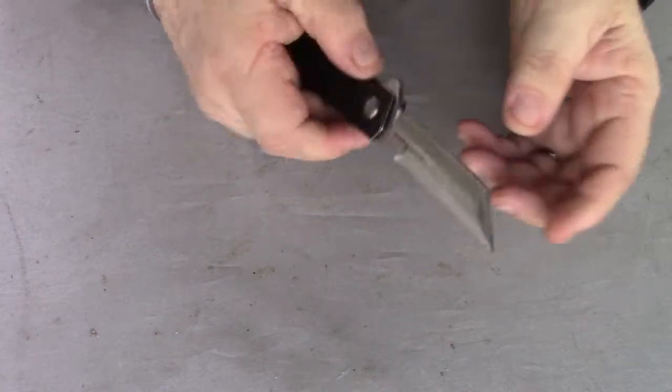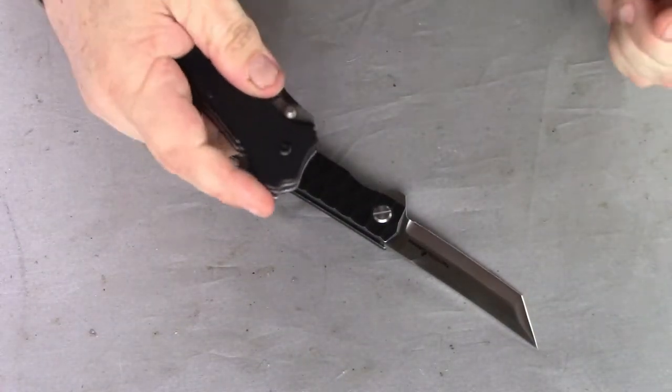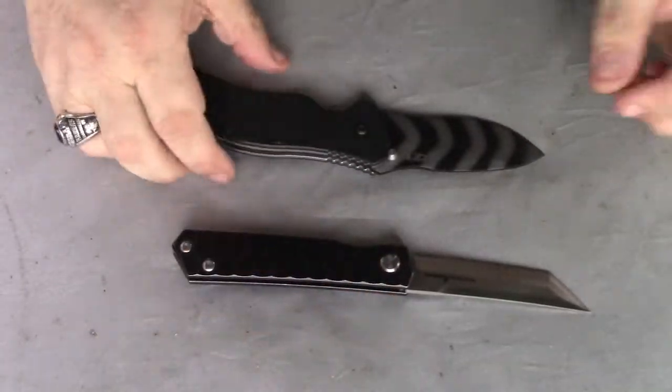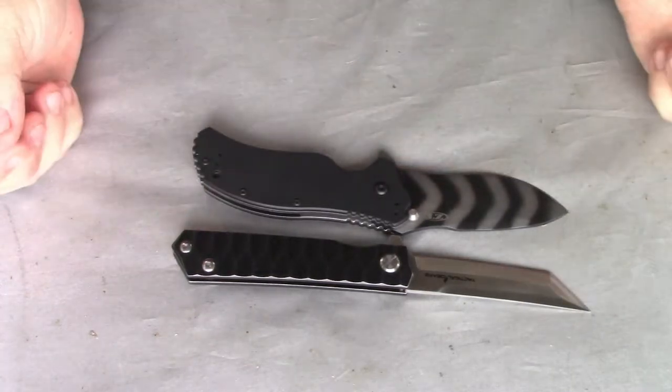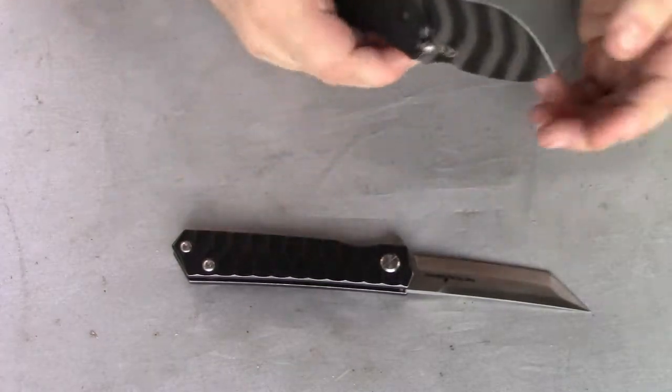Some flippers I like, some I don't like. What I really like is an assisted flipper. Now, this is your ZT. ZT is stout, but if you look at it, this Tactical Gears is a little bit longer, just not as stout.